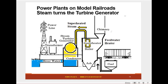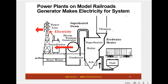The turbine turns a generator that produces power at about 15,000 or 20,000 volts, which goes to a transformer that steps it up from 15,000 volts to 115,000, 230,000, or 345,000 volts.